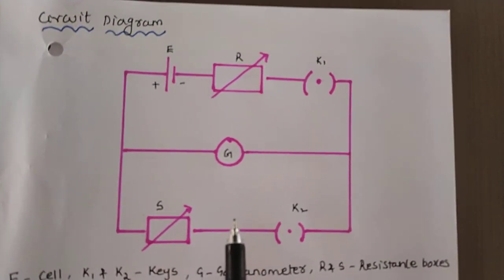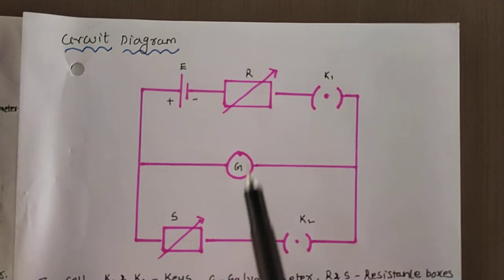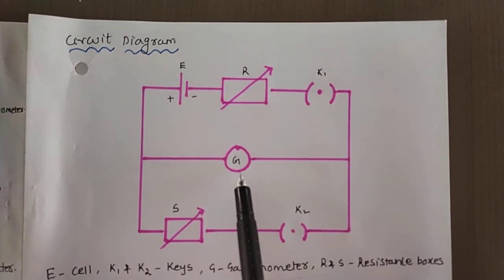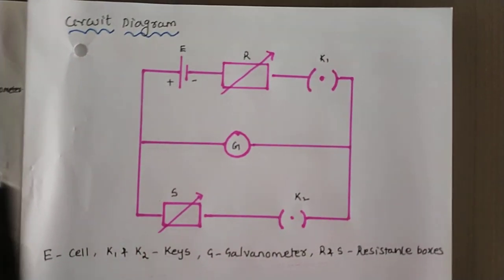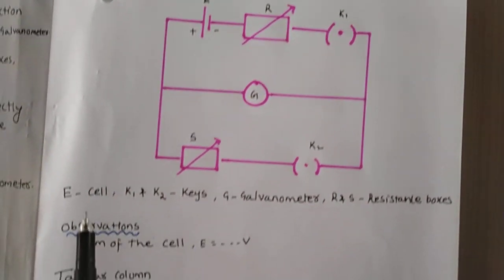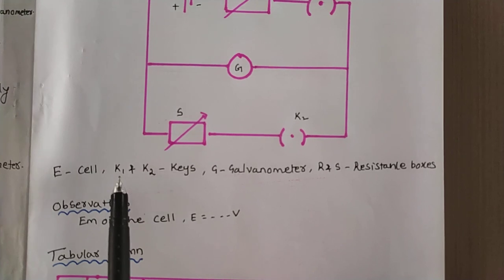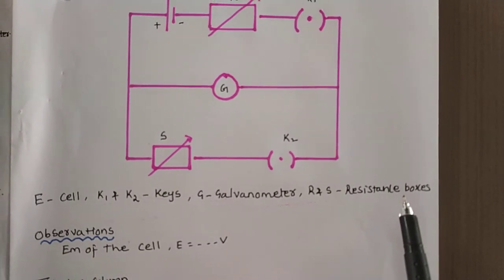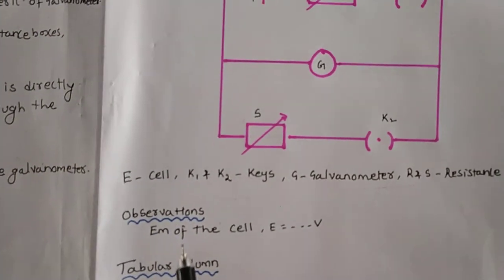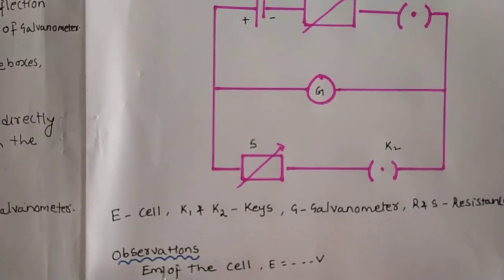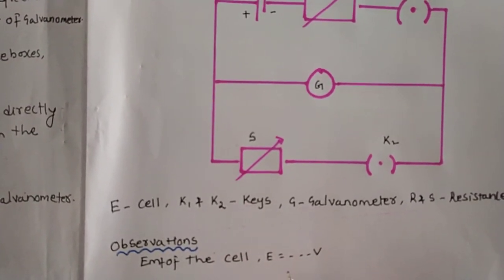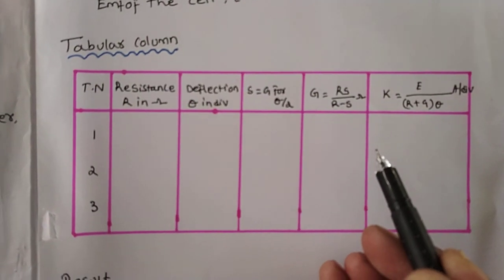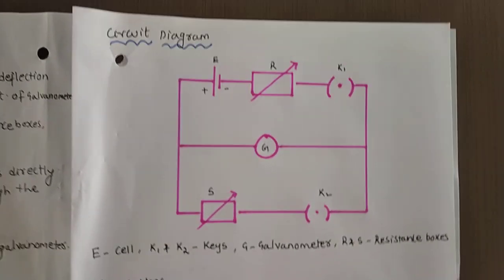This is the required circuit to perform the experiment, where we require two resistance boxes, the source, two plug keys, and the galvanometer. E means the cell — the source. K1 and K2 are the keys, G is the galvanometer, and R and S are the resistance boxes. The observations required include the EMF of the cell, which will be given, and this is the tabular column required to perform the experiment.